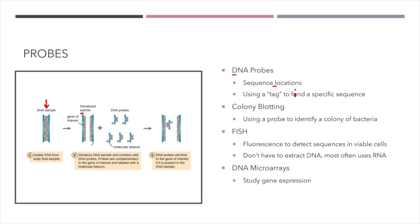We heat it up just enough to break the hydrogen bonds between the bases so that each strand is now separated from the other. Now that these strands are separated, the DNA bases that were base paired together are now open and free, which means I can take another DNA sequence that I created as a researcher. I create it as a probe and it has a sequence that will be complementary to somewhere on my actual strand of DNA.